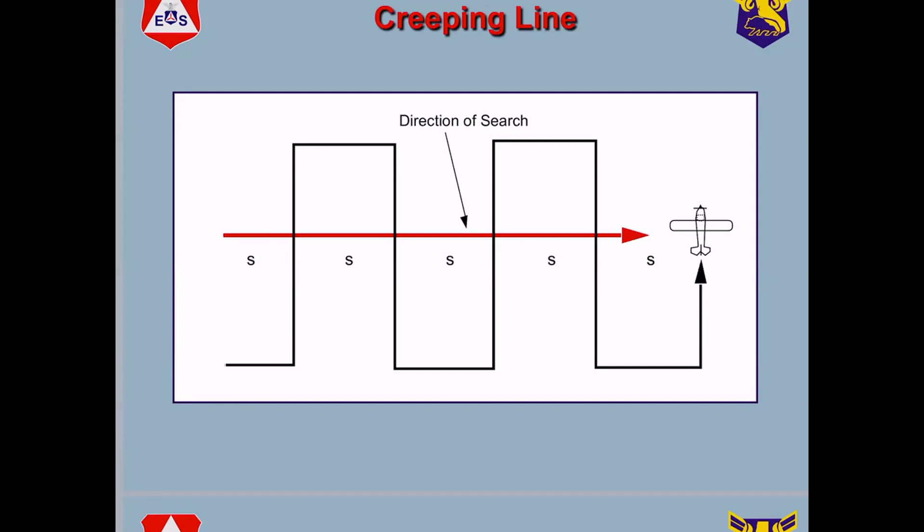We're talking about the creeping line search. If you feel pretty confident, or the incident commander and the AOBD feel pretty confident knowing that the aircraft was on a certain track, either following its route, or a lot of crashes occur right after takeoff. So even checking the extended center line of the runway out for several miles, or the approach end of the runway if somebody we know was lost near the terminal part of the flight. So we use a creeping line search, and basically this is the line, and we're going to be flying perpendicular to the line. So we use our spacing of S, half mile, half mile, kind of like this, called a creeping line search.